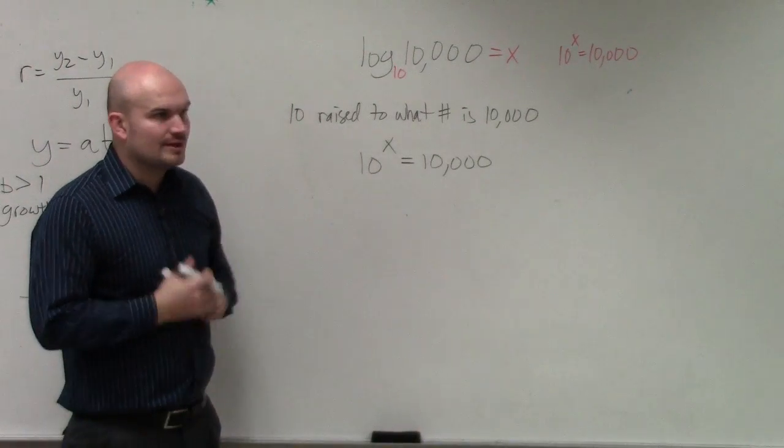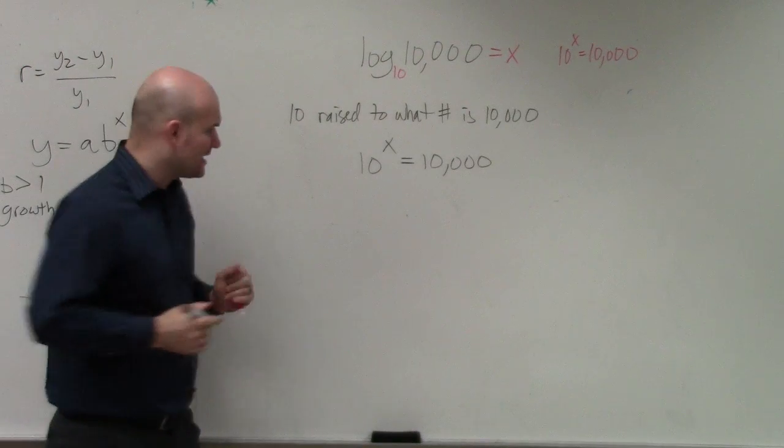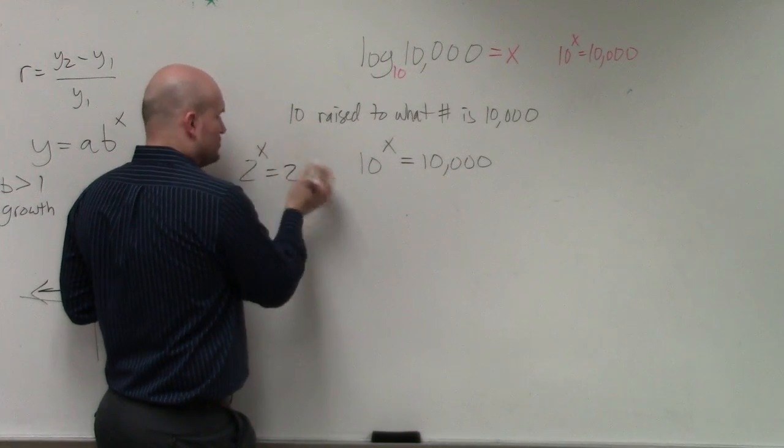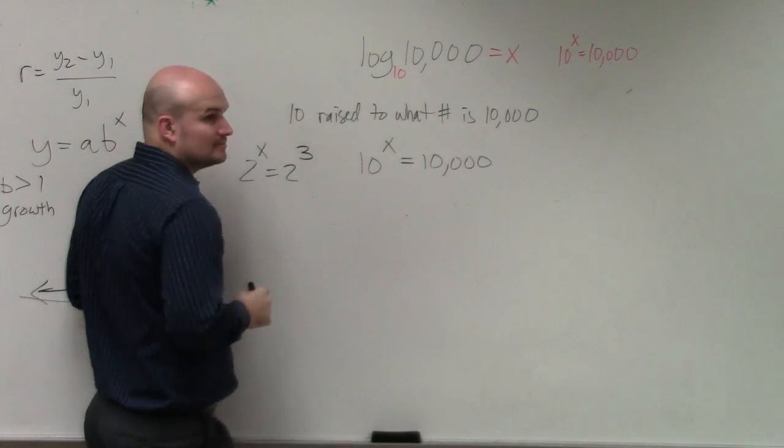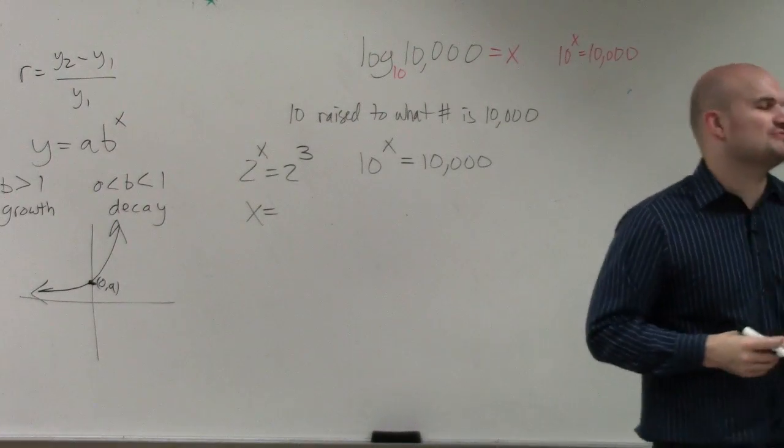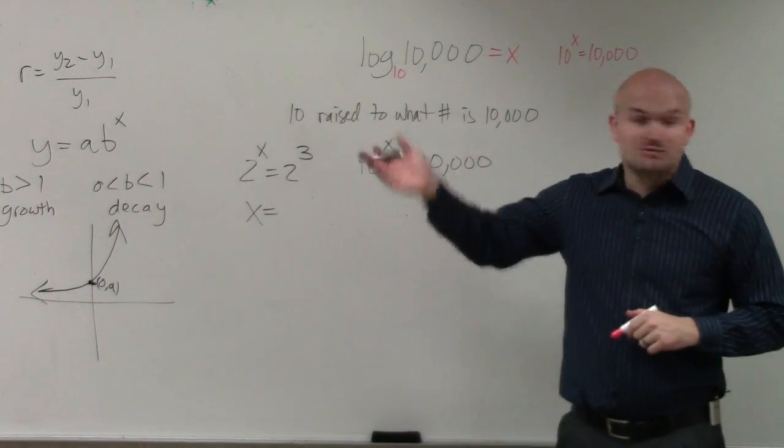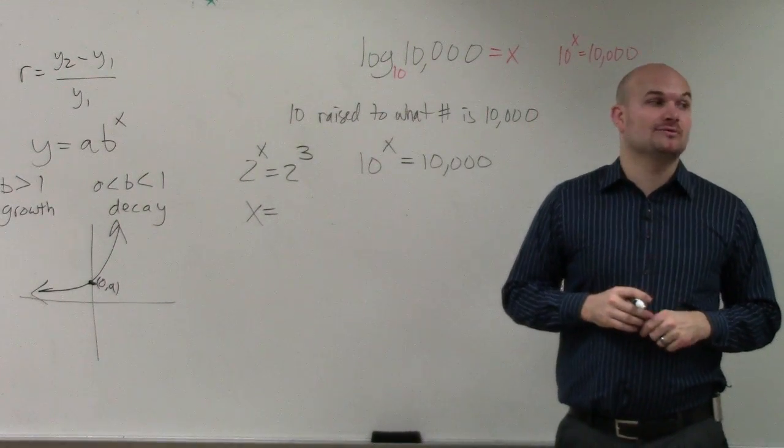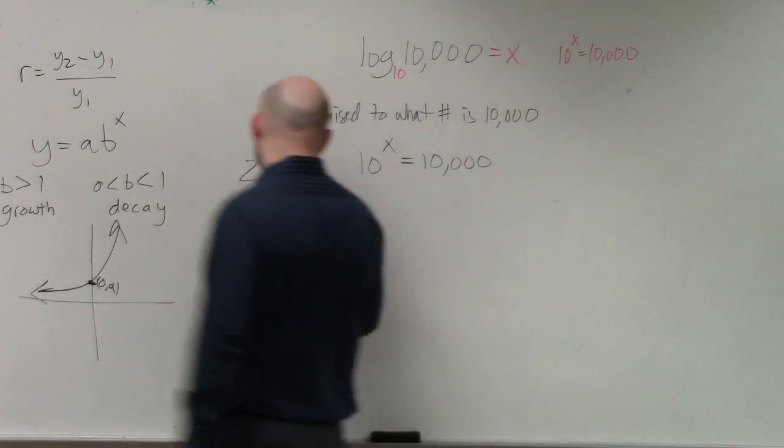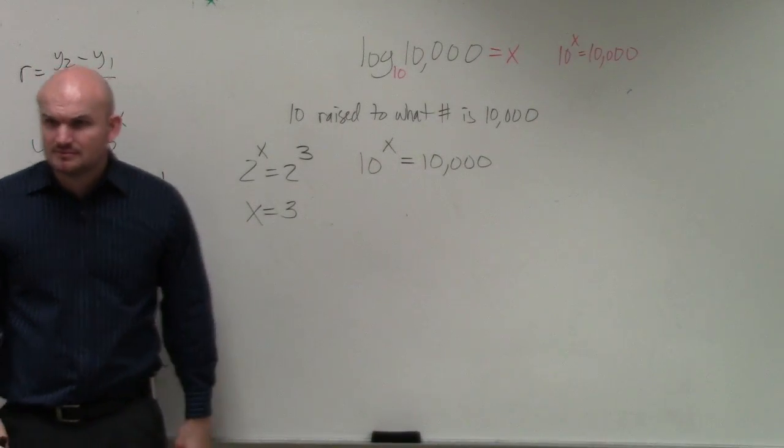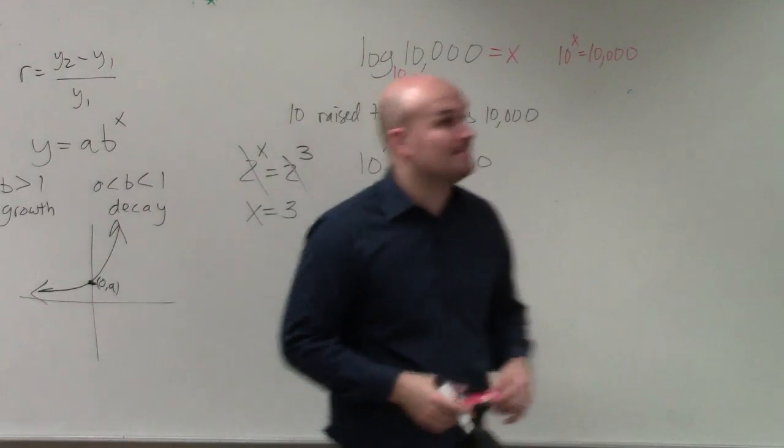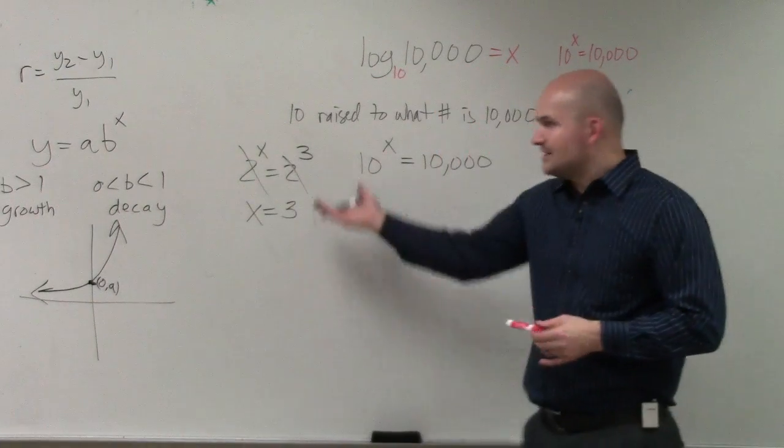So now, how are we going to do this? I'm going to ask you a question. Nick, let's pick on you. If I have 2 to the x equals 2 to the third power, what is x equal to? Let's just give it a random shot. If 2 to the x is equal to 2 to the third power, what would you say x is equal to? 3. Kind of seems obvious, right? Well, there's actually a rule which we call the one-to-one property that makes that true. But you guys can see it's pretty obvious.